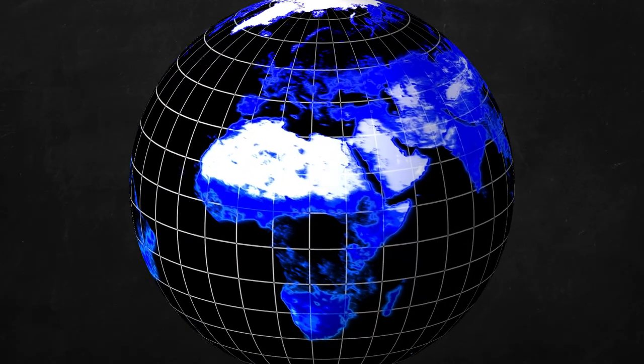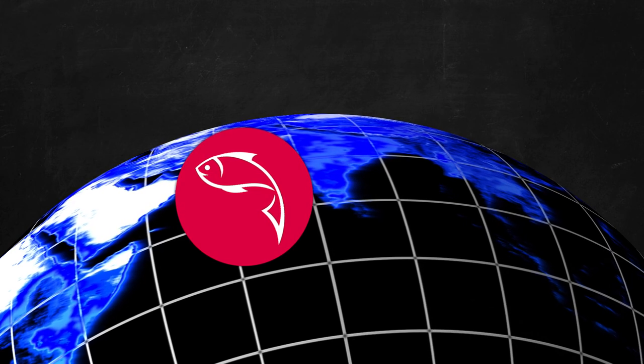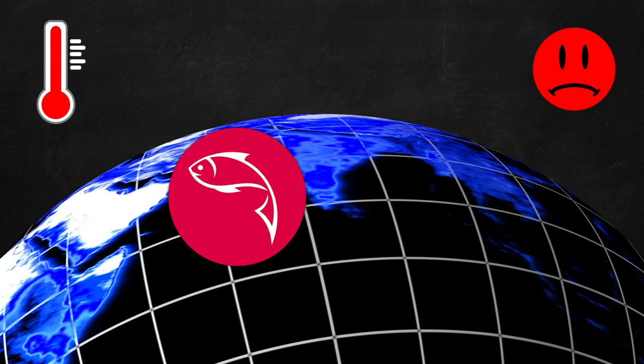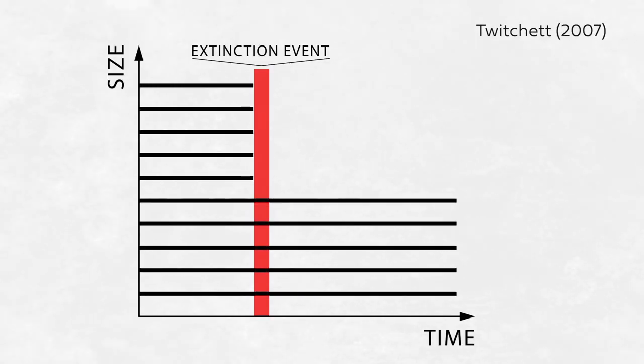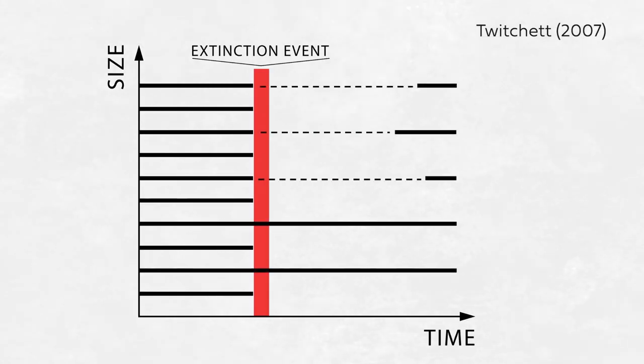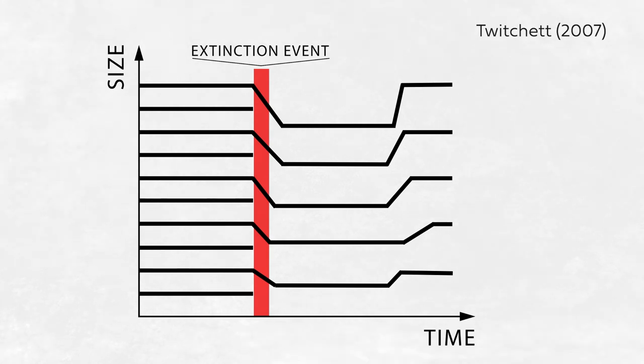The second response to changes in temperature: adaptation. One response of organisms to rising temperatures commonly observed by both ecologists and paleontologists is a reduction in body size. In the fossil record there are several patterns during ancient warming events that can produce on average smaller communities. The first would be the preferential extinction of larger organisms. Second, larger organisms could disappear temporarily and then reappear — we call that Lazarus taxa. Third, the origination of predominantly small species after the event. And the fourth is what we call the Lilliput effect, where individuals within a species decrease in adult body size in response to climatic stress.